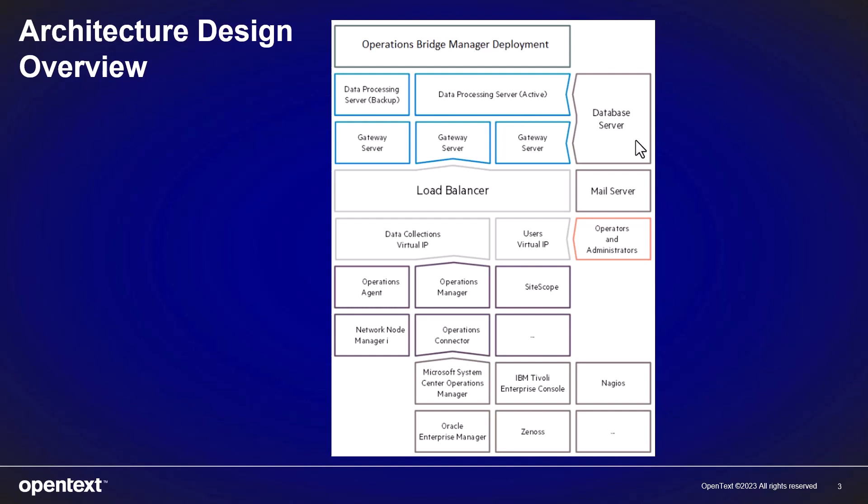The OBM databases contain system-wide and management-related data. This data includes administrative settings and user-provided information, events and event-related data, as well as configuration data and configuration item, CI data. This includes the CIs that model the computer system's infrastructure and the relationships between them.